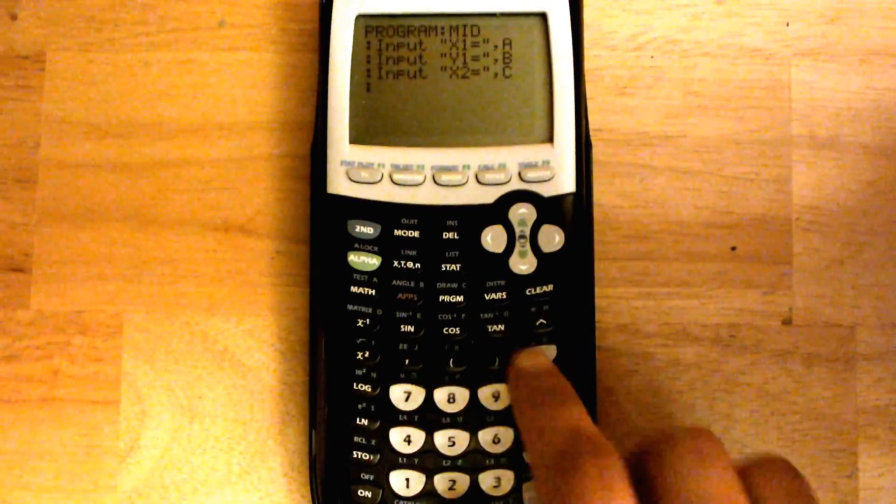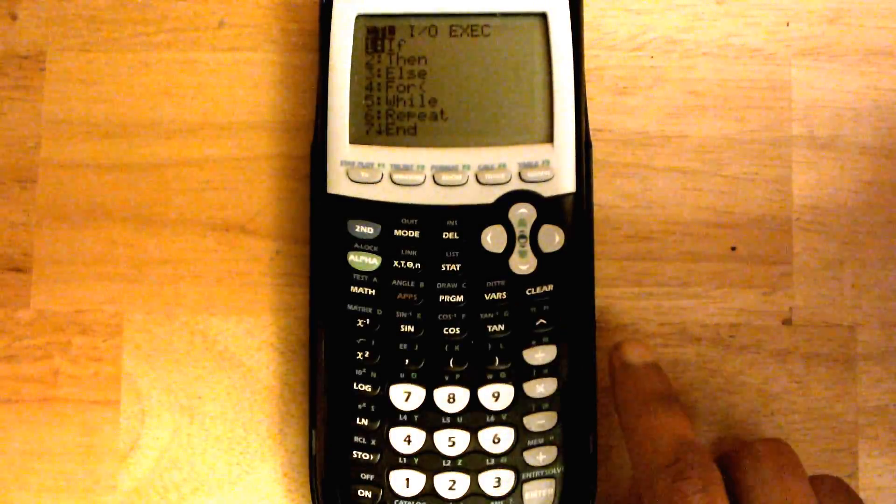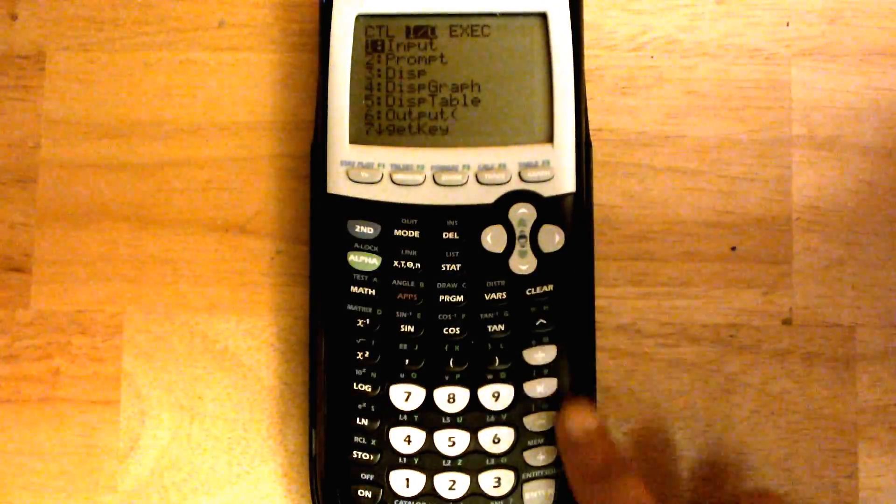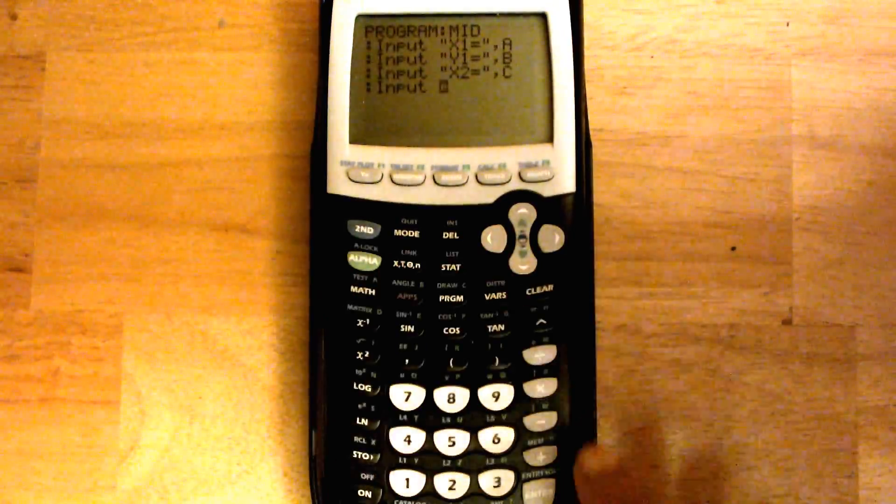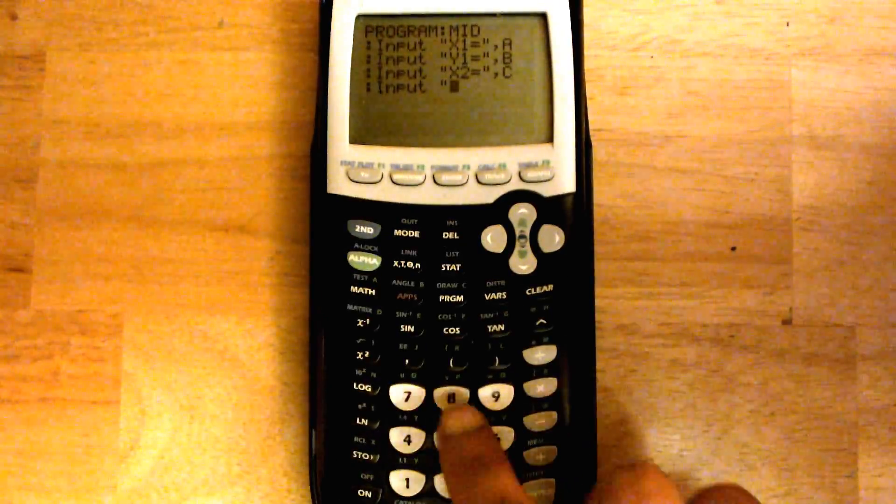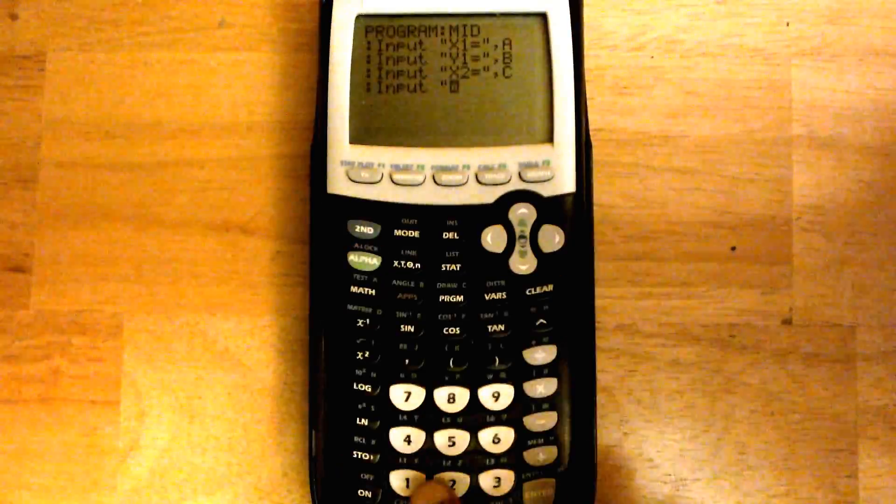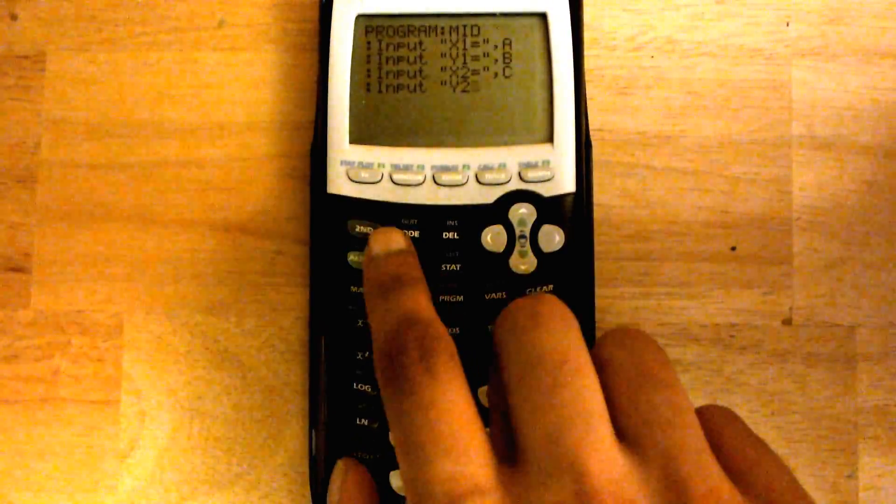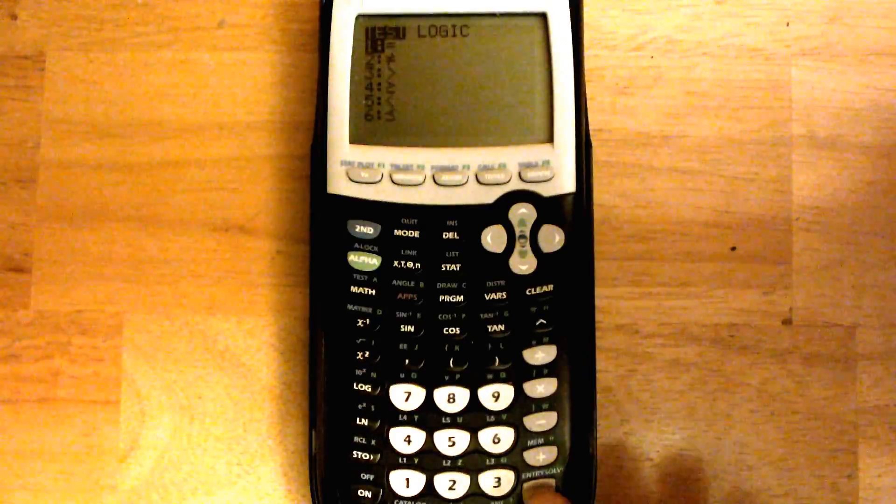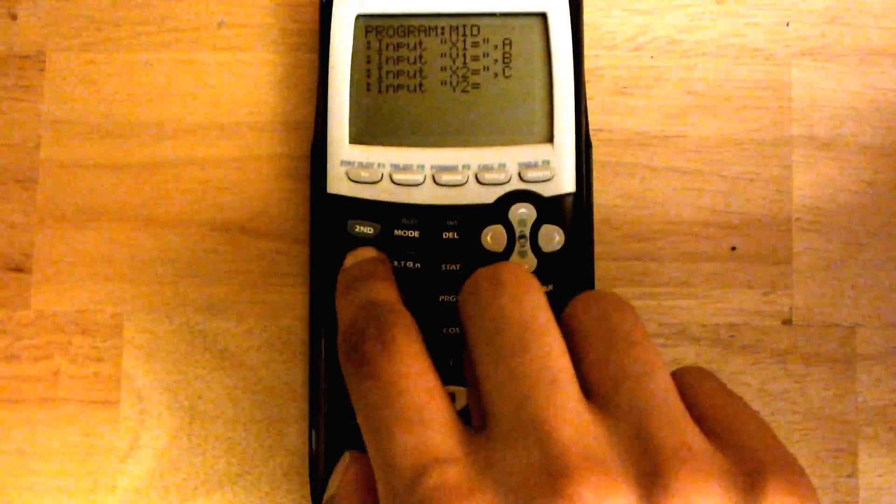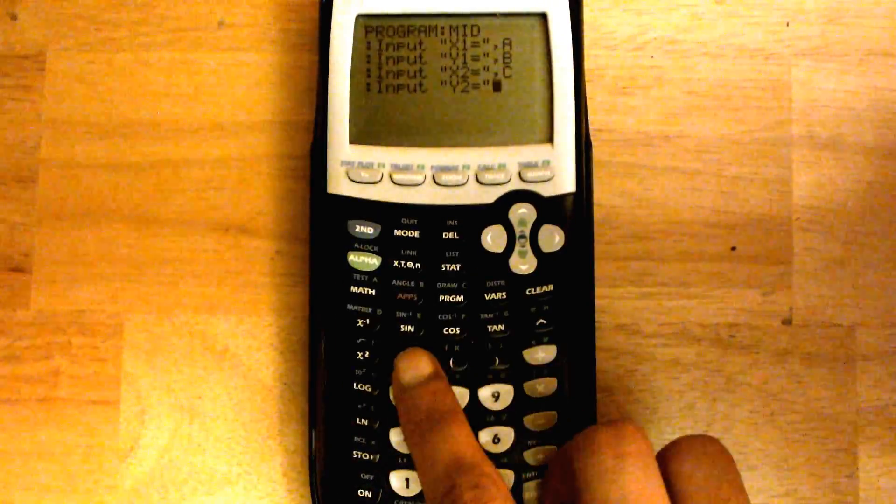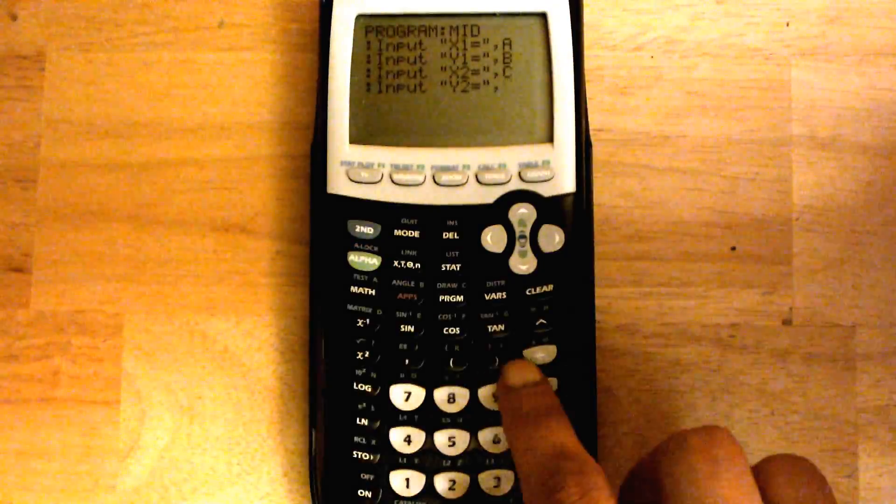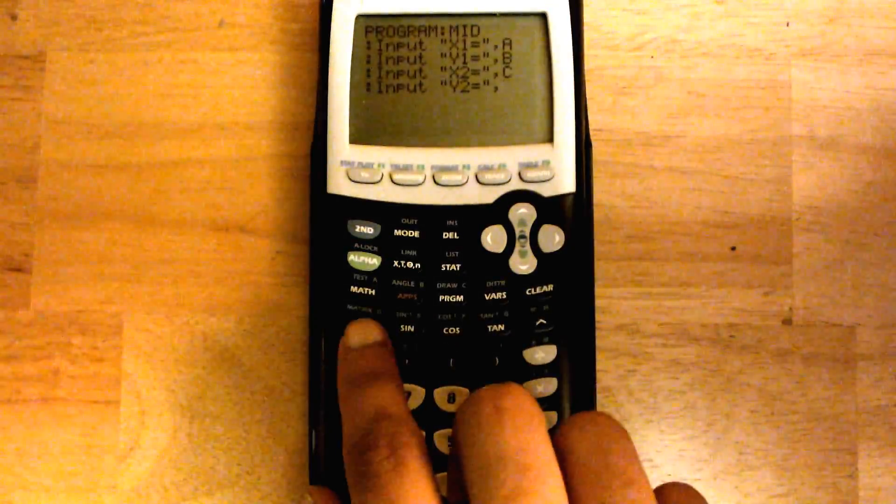And last one, program, slide all the way over one, enter. Alpha plus, alpha 1, and then the number 2. Second math, enter. Alpha plus, comma, alpha d.